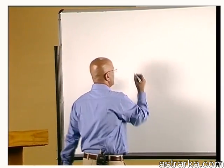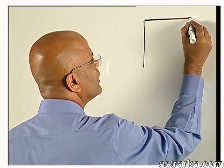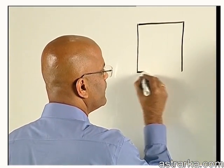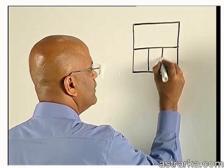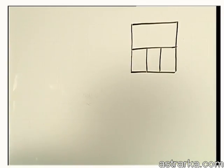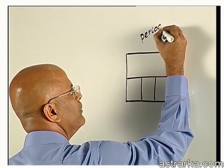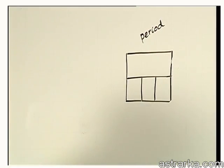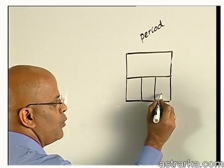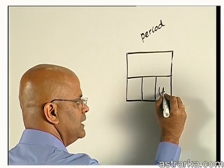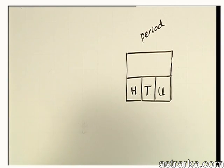So, the way we actually write numbers is by using two significant concepts. The first concept is called period, and the next one is what each one of these are. This is basically units, tens and hundreds, right?